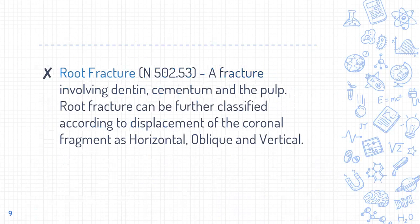Next is root fracture — a fracture involving dentin, cementum, and the pulp. Root fracture can be further classified according to the displacement of the coronal fragment, and based on the fracture line it can be divided into horizontal root fracture, oblique root fracture, and vertical root fracture.